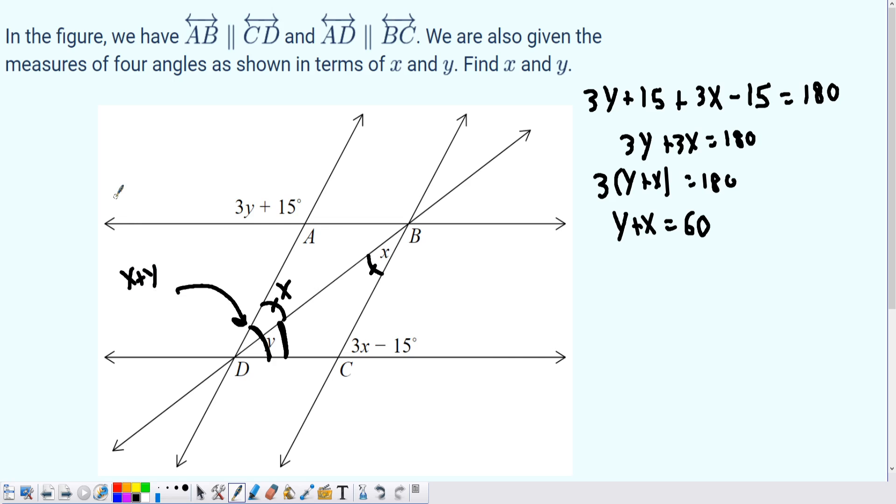But how does that help me solve for x or y? Well, what I also had found out earlier was that this very same angle here is the same as 3x-15. So if x+y and 3x-15 are that same angle, I get the following equation: 3x-15 equals x+y. And hopefully you can see what I'm about to do. x+y, as we know, is 60.